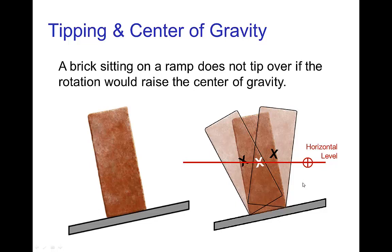In this situation, we know that at this angle the brick does not tip over, because if the brick tipped over towards either side, the brick would have to raise its center of gravity, and it won't do that. It will only tip over if rotating would lower its center of gravity.